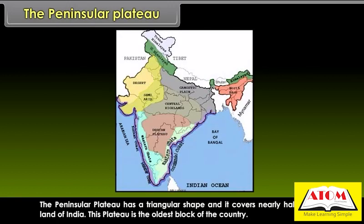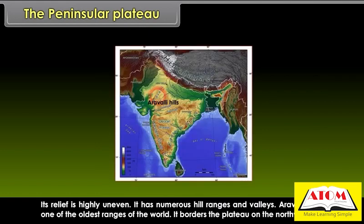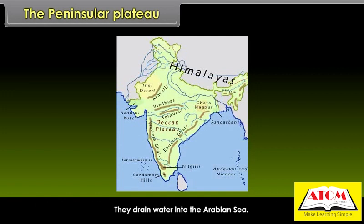The Peninsula Plateau has a triangular shape and covers nearly half the total land of India. This plateau is the oldest block of the country. Its relief is highly uneven, with numerous hill ranges and valleys. The Aravalli Hills is one of the oldest ranges of the world and borders the plateau on the north-west side. The Vindhyas and the Satpuras are other important ranges. Narmada and Tapi flow through these ranges as west-flowing rivers, draining water into the Arabian Sea.